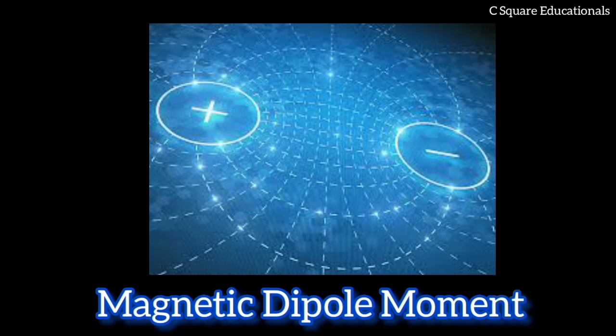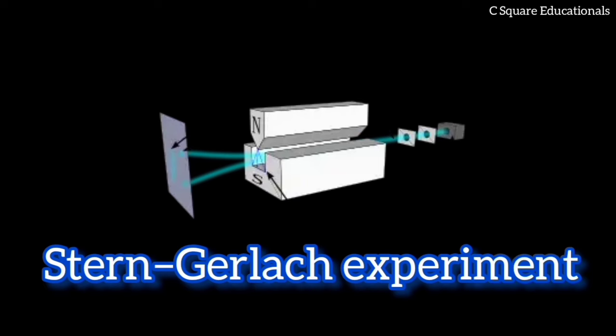just like a rotating electrically charged body in classical electrodynamics. These magnetic moments can be experimentally observed in several ways, for example by the deflection of particles by inhomogeneous magnetic fields in a Stern-Gerlach experiment, or by measuring